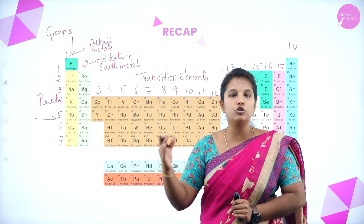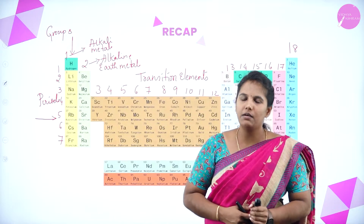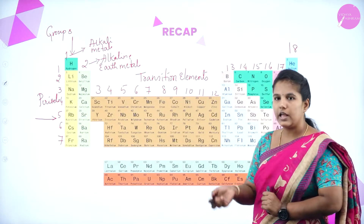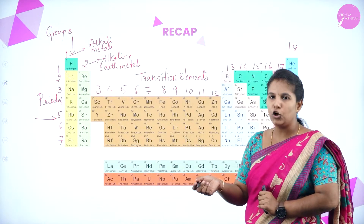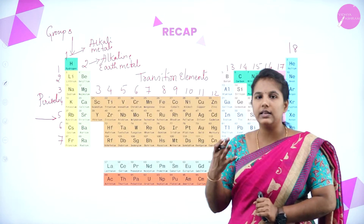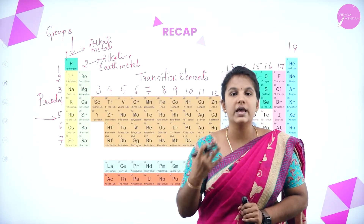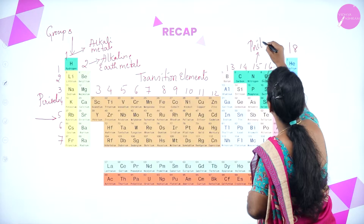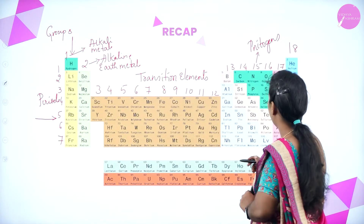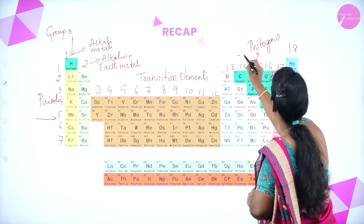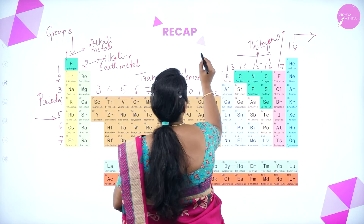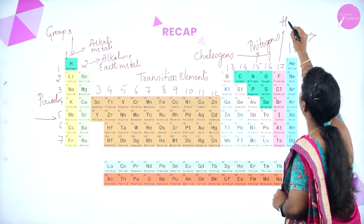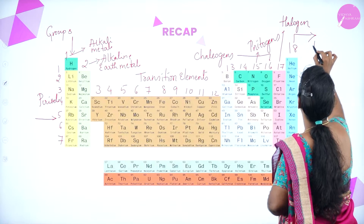From group 13 to group 18, they are also known as main group elements or representative elements. Group 13 is known as the boron family. Group 14 is known as the carbon family. Group 15 is known as pnictogens, because these gases cause suffocation. Group 16 is known as chalcogens, as they are ore-forming elements. Group 17 is known as halogens, because they form acids when they react with water. Group 18 is the noble gases.